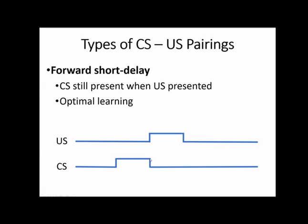While you're still ringing the bell, the unconditioned stimulus starts. So while ringing the bell, you would take out the plate of food. The bell ringing can then stop while the plate of food is still there. For the forward short delay, what matters is the overlap where they are happening at the same time for a brief moment. This technique gives optimal learning, because the closer together in time the two stimuli are, the easier it is to form a link between them. If you hear the bell and immediately get food, they are temporally close together.